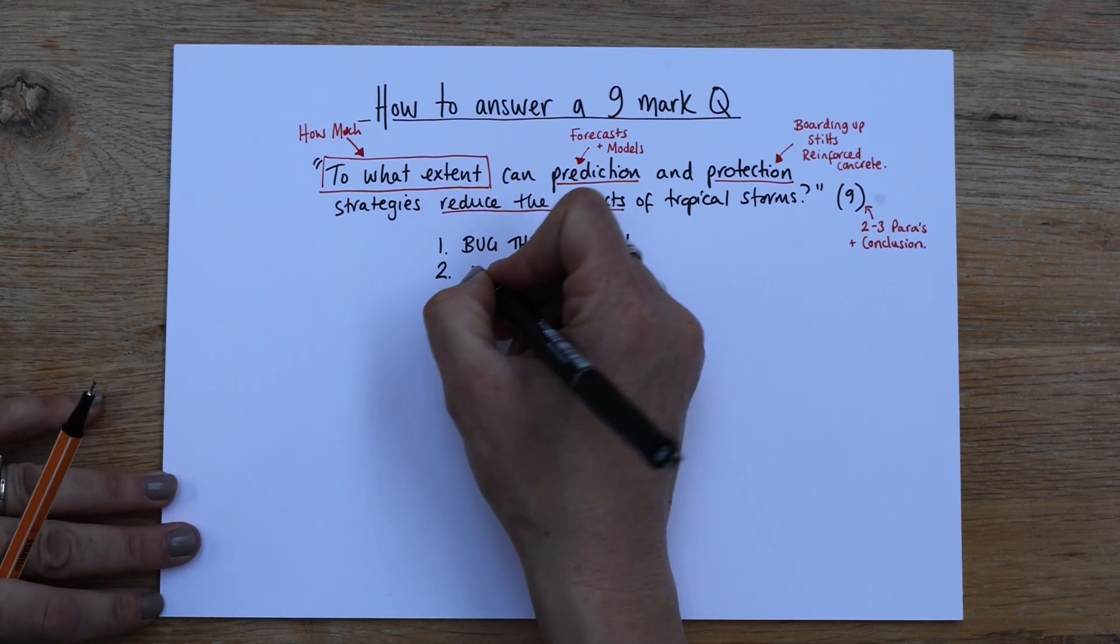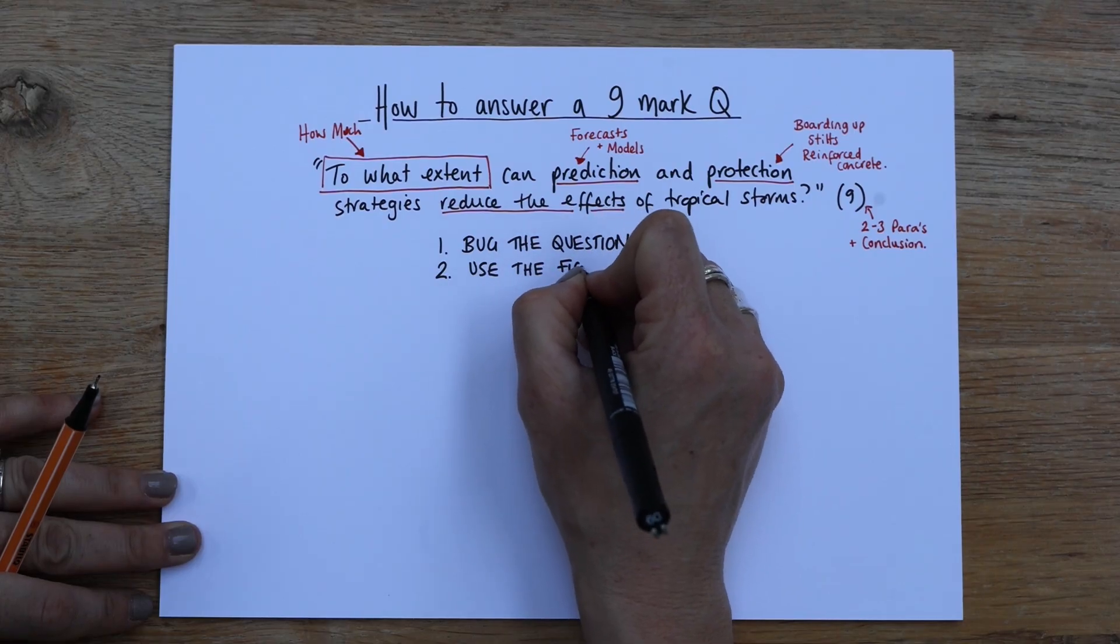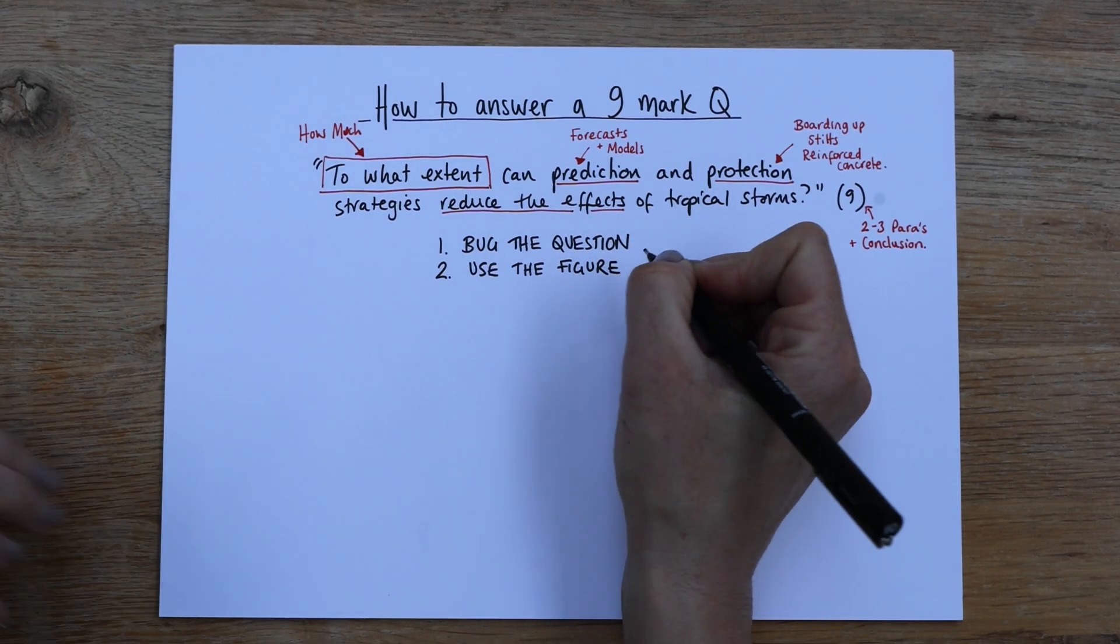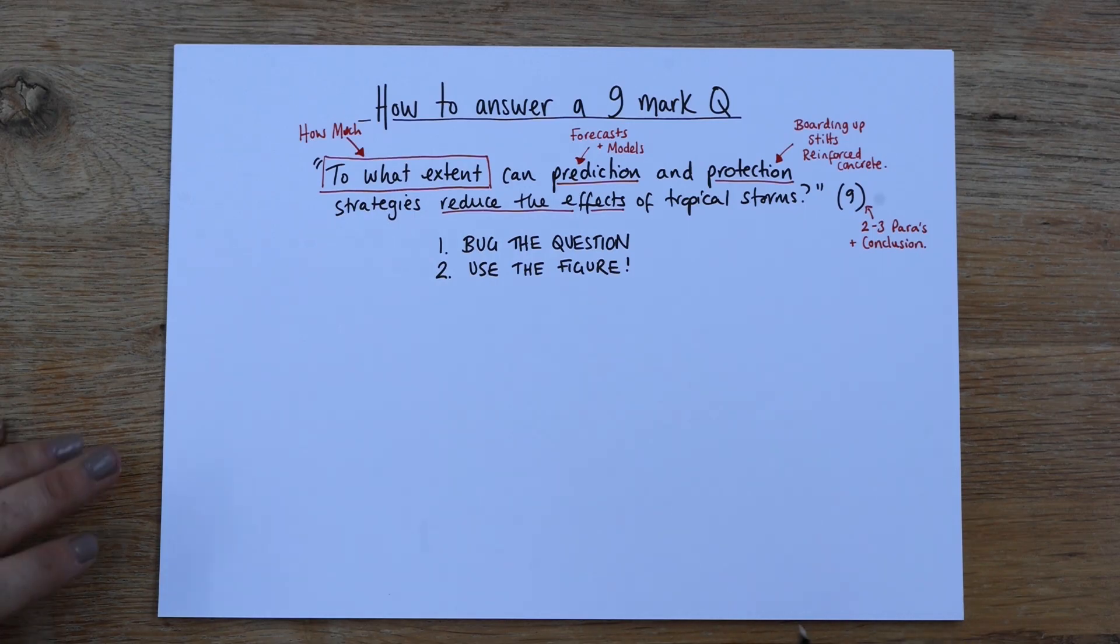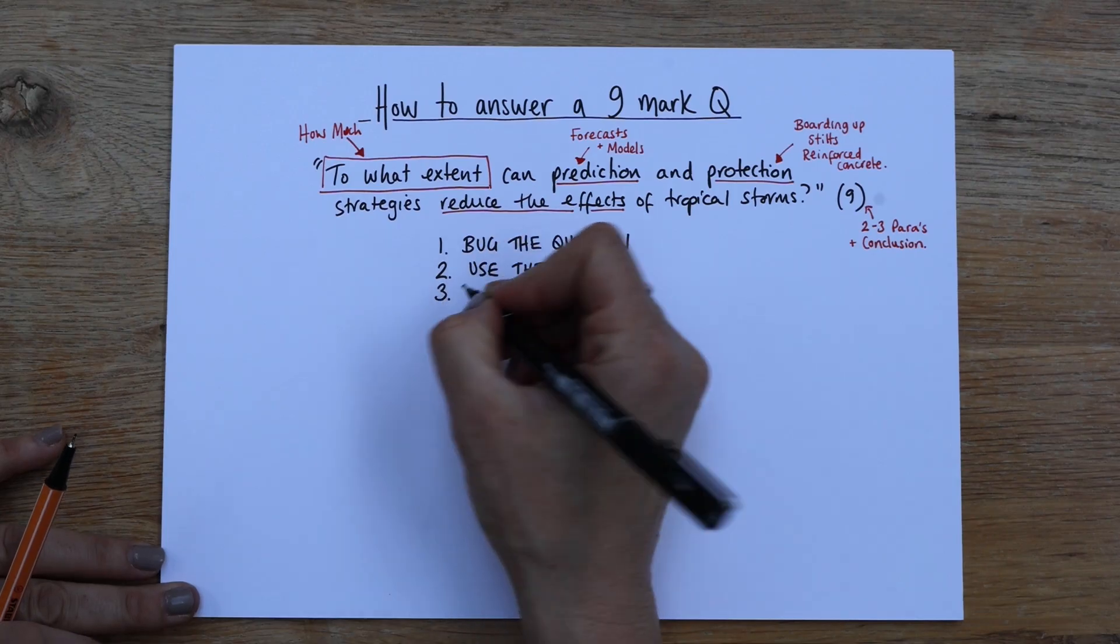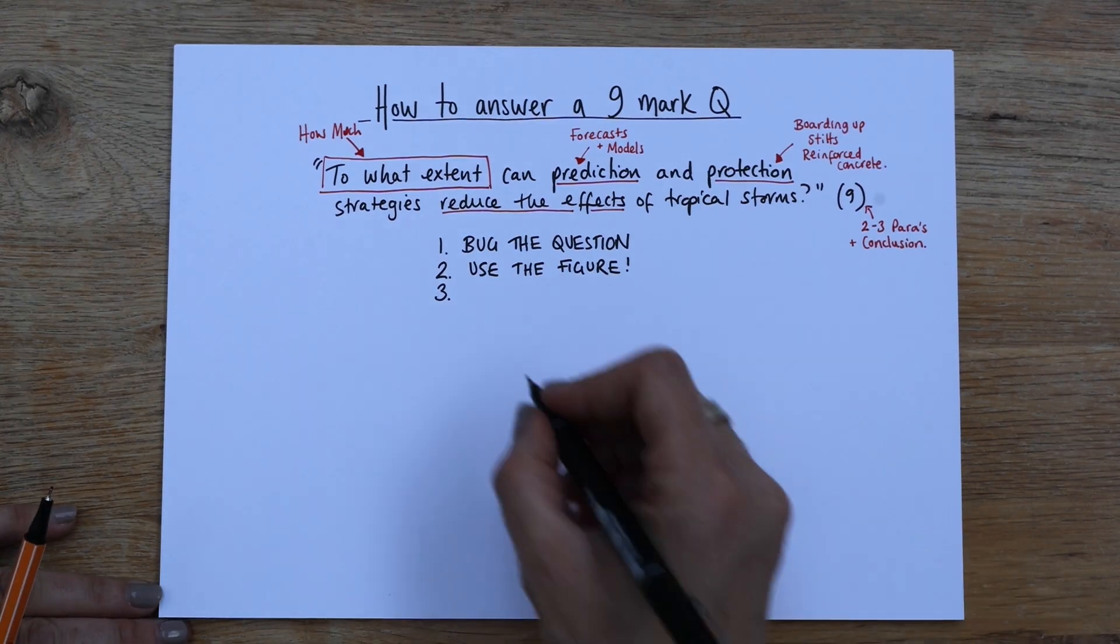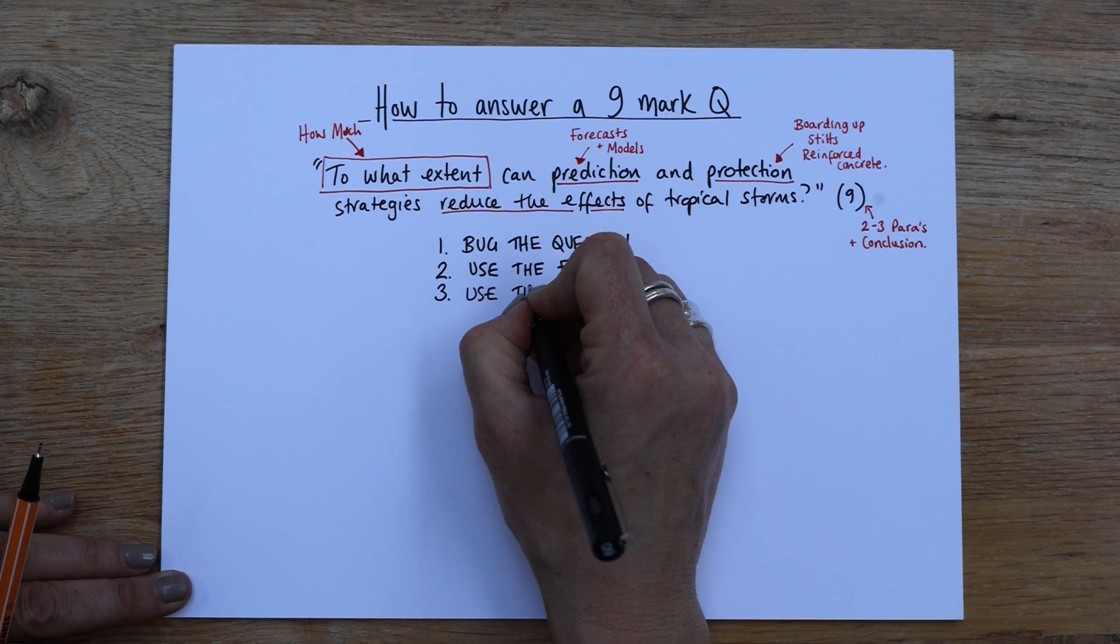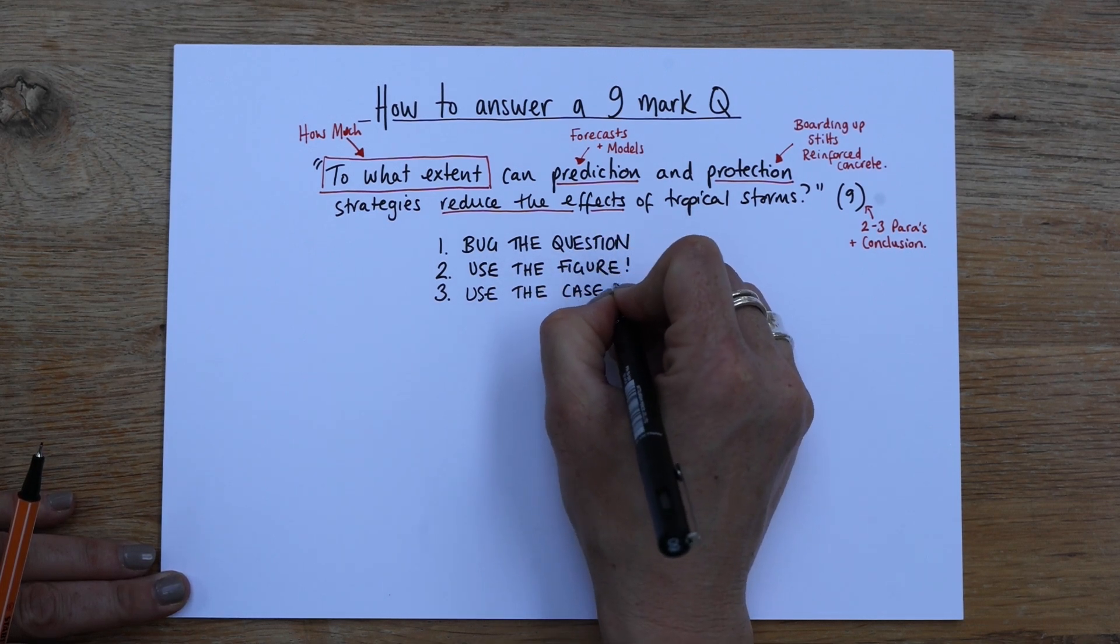There's no figure with this one. But if there was one, always use it. Always use it and start your work almost with it. So you want to say, you know, e.g. just figure 15 shows or figure one shows and you really just jump in on the figure straight away. Likewise, if it says use the figure and your own understanding, that is code, that's AQA code for use your case study. I wouldn't even hesitate. I would use the case study you've been taught.